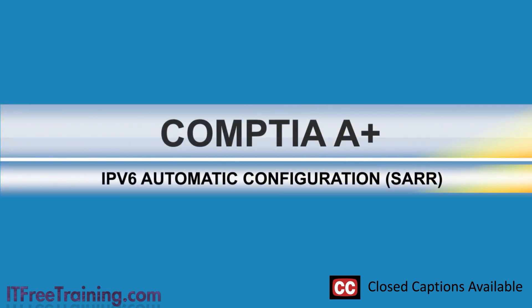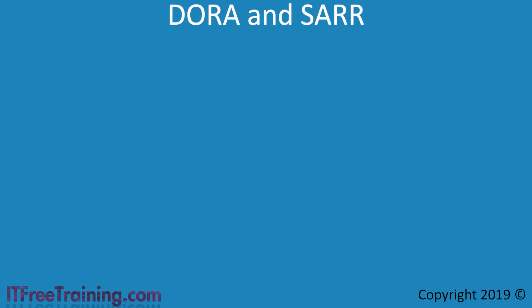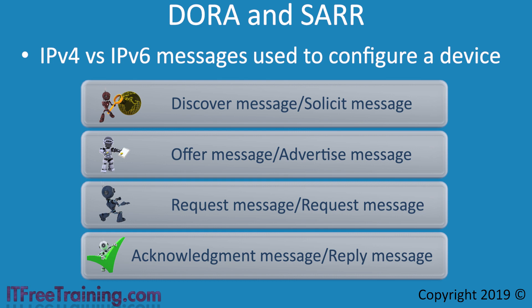In this video from ITFreeTraining, I will look in detail at the process that IPv6 devices use to automatically obtain network configuration. If you have seen our previous videos on DHCP, you will remember us comparing the IPv4 and IPv6 messages used to obtain an IP address. The process each protocol uses looks very similar, but we will see that there is more involved with IPv6.